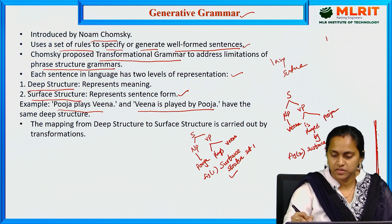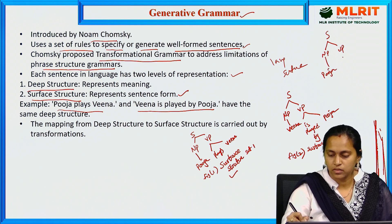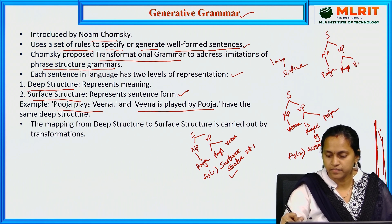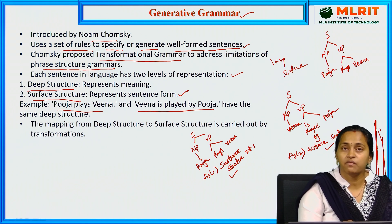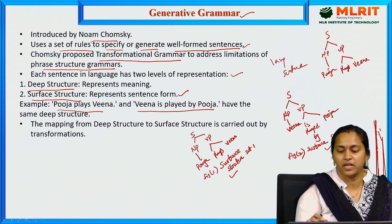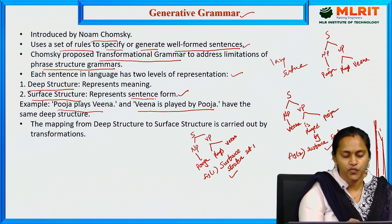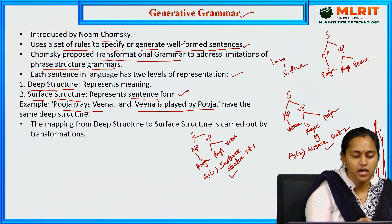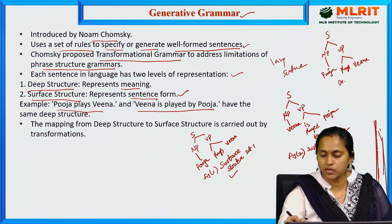Deep structure captures the overall meaning. Both 'Pooja plays Veena' and 'Veena is played by Pooja' have the same meaning — the deep structure defines the overall sentence meaning. The difference is that surface structure defines the sentence form, while deep structure defines the overall meaning. The mapping from deep structure to surface structure is carried by transformations.